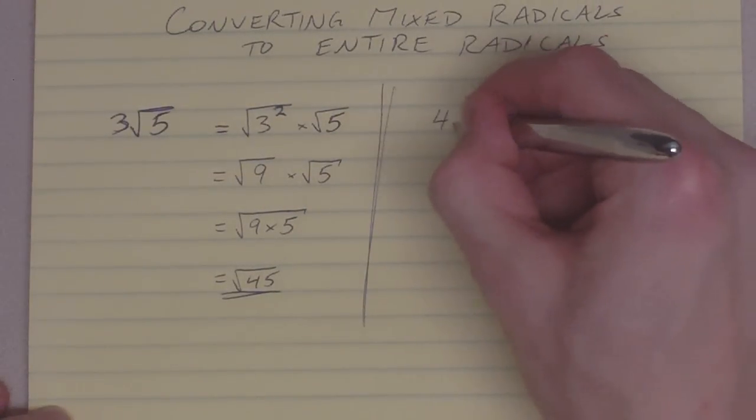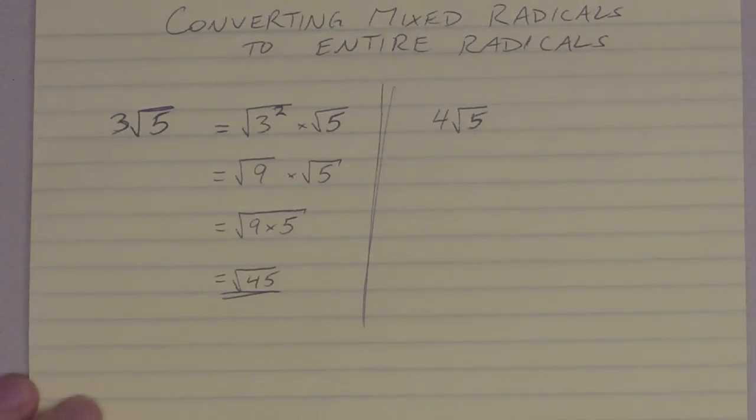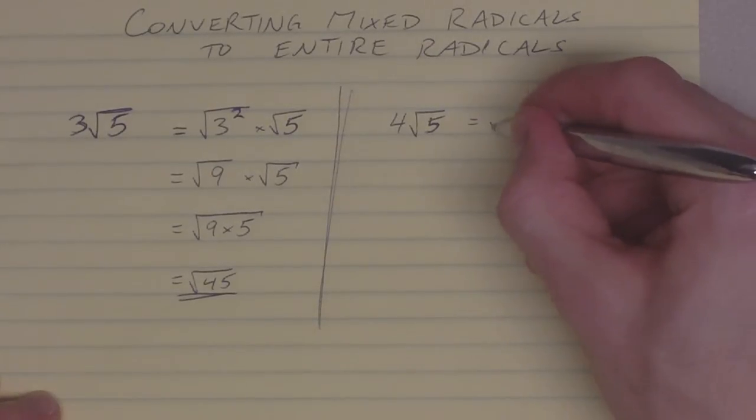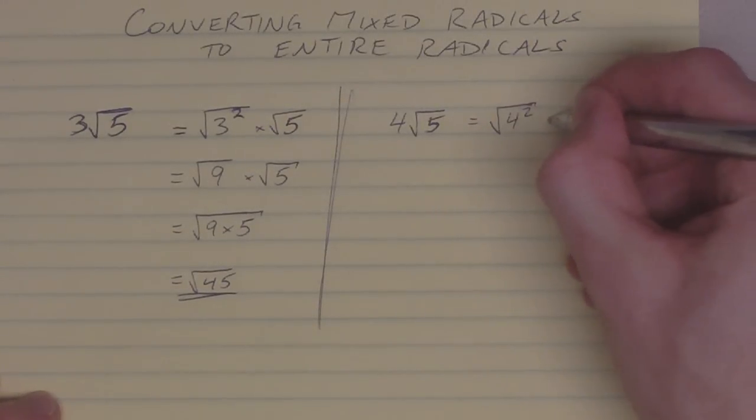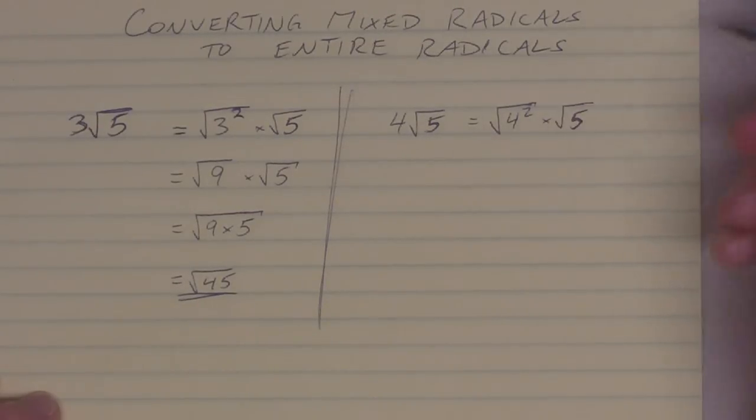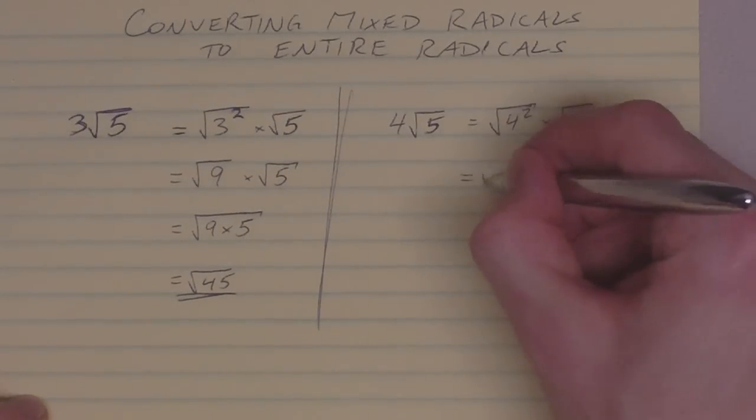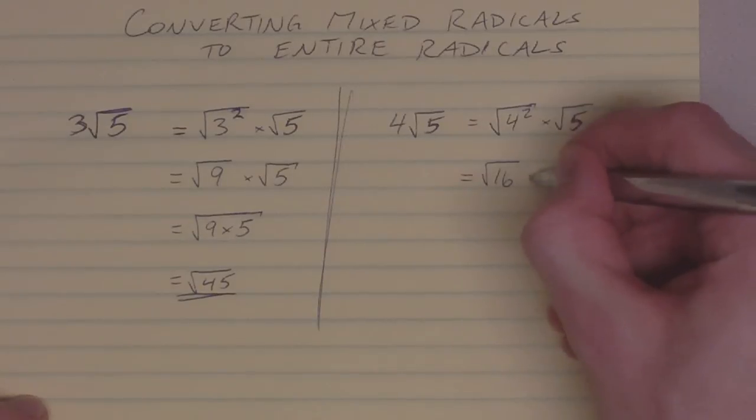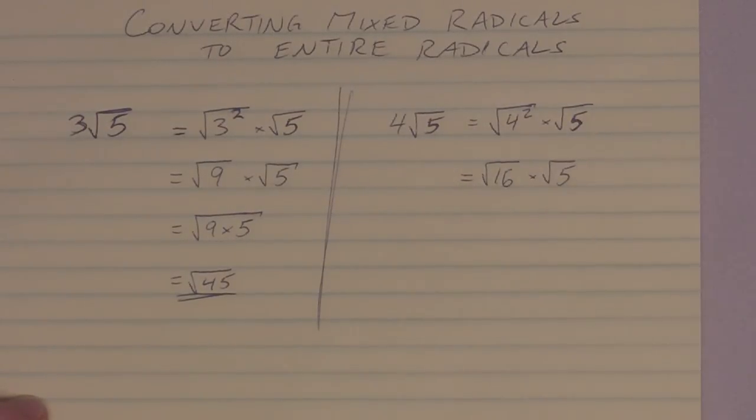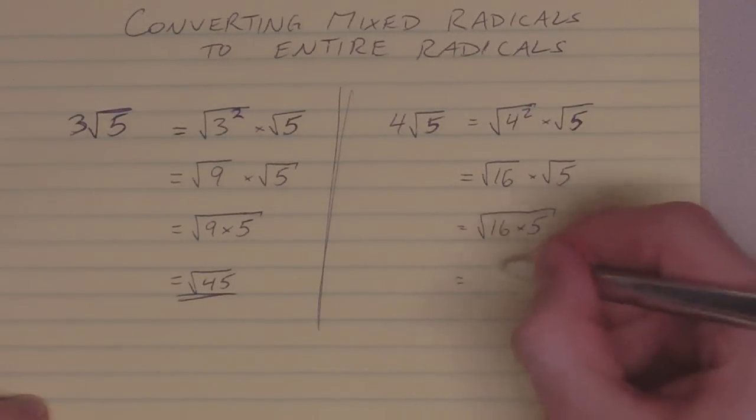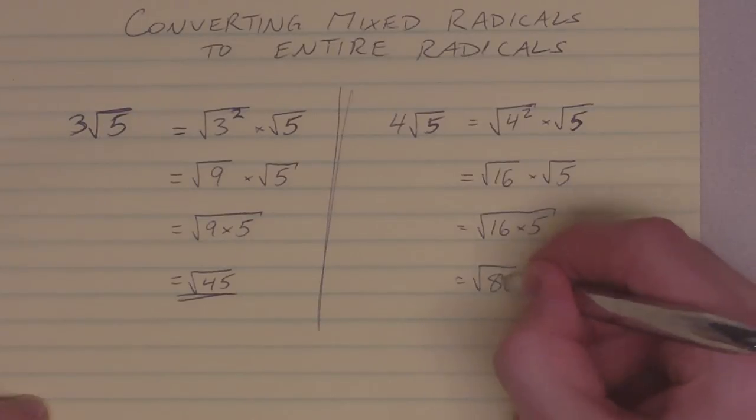How about 4 root 5? Well, let's do the same thing. Take that 4, rewrite it as the square root of 4 squared times root 5. I don't know why I happen to pick root 5 again. Anyway, it's just a simple number to work with. Square root of 4 squared, same thing as square root of 16 times root 5. Combine them both under one radical. Work out what 16 times 5 is, and we get the square root of 80.